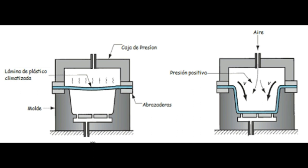Este método utiliza tanto el vacío como presión de aire positiva para forzar a la lámina. El proceso es similar al termoformado al vacío. La diferencia es que se aplica una presión de aire para que la lámina ya suavizada entre en contacto con la cavidad del molde.